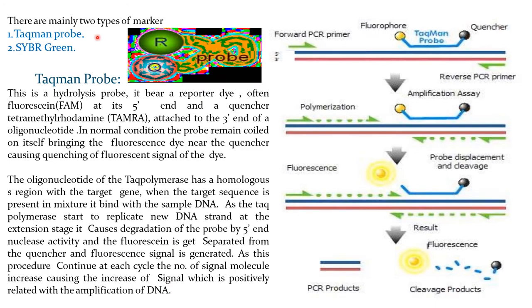There are two types of markers: TaqMan probe and SYBR Green. The TaqMan probe is a hydrolysis probe. It bears a reporter dye, often fluorescent, at its 5' end and a quencher — tetramethyl rhodamine — attached to the 3' end of the oligonucleotide. In normal conditions, the probe remains coiled onto itself, bringing the fluorescent dye near the quencher, causing quenching of the fluorescent signal.